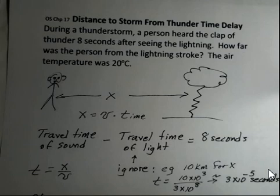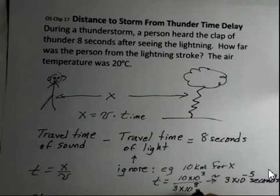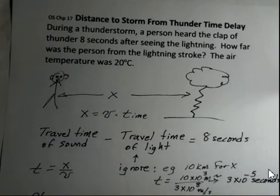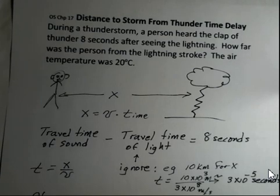But how much time does light require to travel 10 kilometers? Well, 10 times 10 to the third would be our distance of meters divided by three times 10 to the eighth meters per second. It is important to have meters for the distance units for both numbers, but that generates three times 10 to the minus five seconds. That's ignorable in terms of how much time the sound is taking.